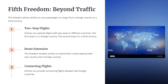Fifth Freedom of the Air: The right to carry passengers or cargo from one country to a second country with a stop in a third country to pick up or discharge passengers or cargo. Airlines can operate flights with two stops in different countries — the first stop in a foreign country, the second in a third country. This freedom enables airlines to extend their routes beyond their own country and a foreign country, providing connecting flights between two foreign countries.